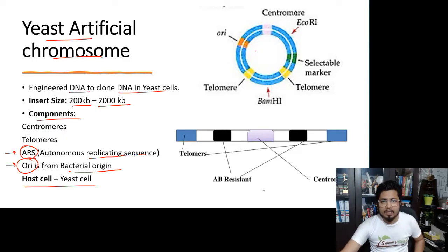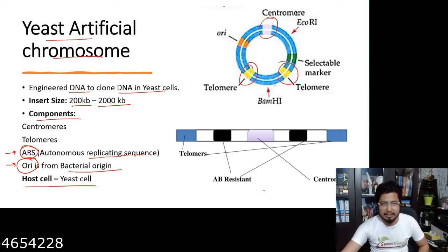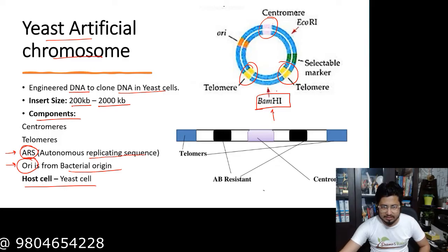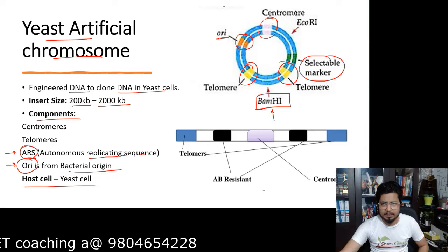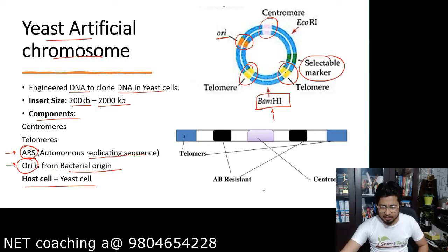This is how it looks like, where you can see the details. This is the circular structure. This is what we have centromere. Then we have this telomere region, two telomeres. And in between, we have a restriction endonuclease site, that is BAM H1 site. And this is the origin, bacterial origin. And this is the selectable marker that is present somewhere between the centromere and the telomere.